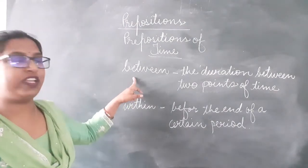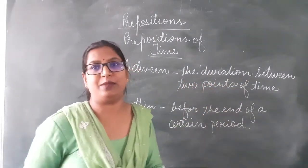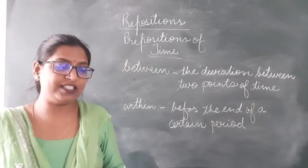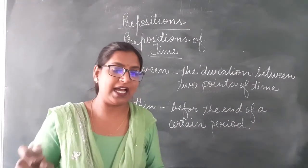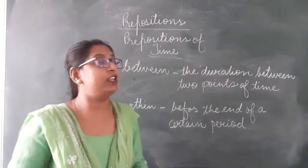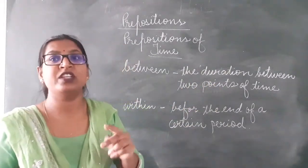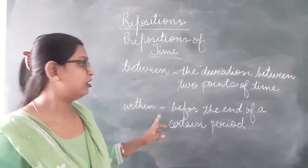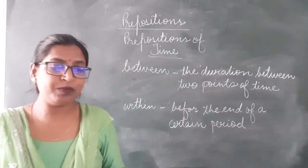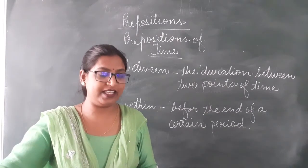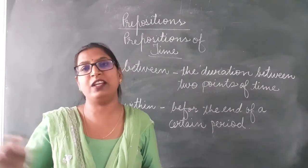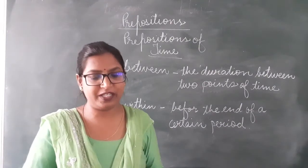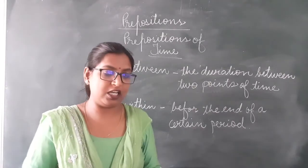The next preposition is 'between'. It indicates the duration between two points of time. For example, I am available between 5:30 and 6 in the evening — indicating the time period between two points. Then 'within' indicates an action before the end of a certain period. For example, the work should be done within 3 days — meaning before the end of those 3 days.